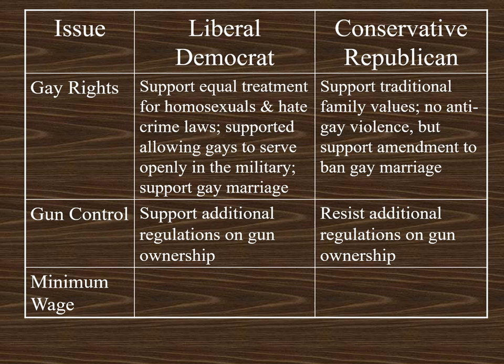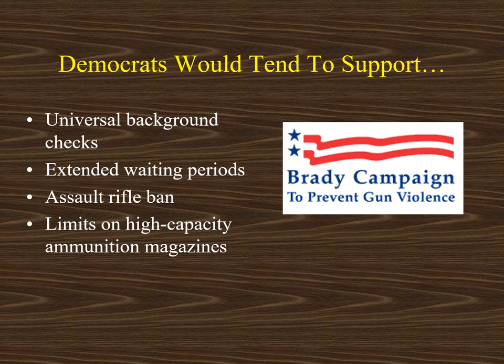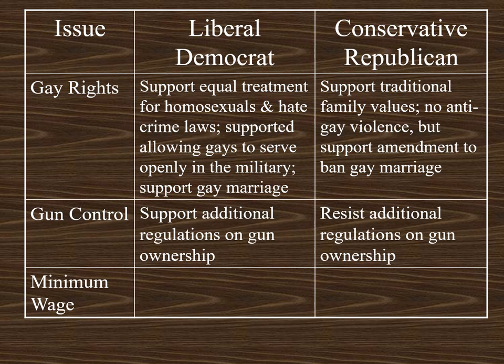Liberal Democrats would take the opposing point of view and would support additional regulations on gun ownership. There are a range of interest groups that promote more gun control — one would be the Brady Campaign to Prevent Gun Violence. Democrats would tend to support ideas like expanded background checks, extended waiting periods, an assault rifle ban, and limits on high-capacity magazines. If you're trying to explain this issue of gun control, try to offer some examples — it's more sophisticated than just one side wants to take away people's guns and another side wants to promote gun ownership.